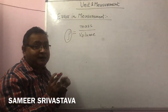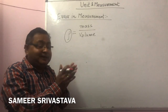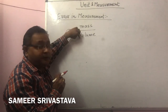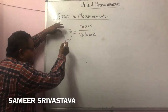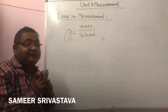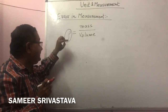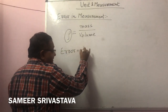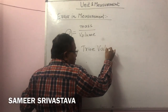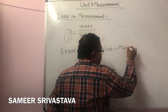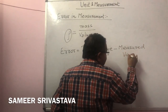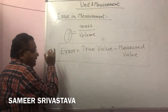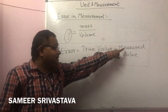If mass and volume are accurate in our experiment, then the value of density becomes accurate. But if any inaccuracy is present in these quantities, the value of density is not accurate. We find some error in the density. Error is nothing but the true value or actual value minus the measured value.